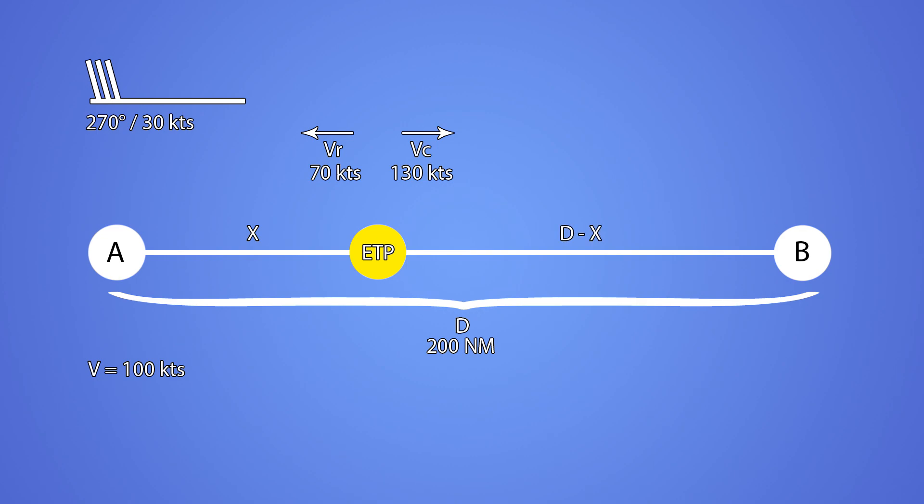As we want the times to be the same for either continuing from ETP or returning from it, we can write a simple equation where the time to continue is equal to time of return. Time is equal to distance divided by the speed.